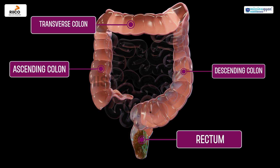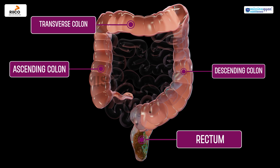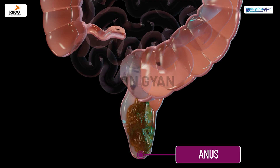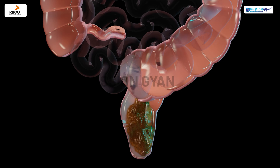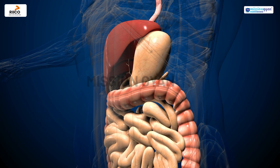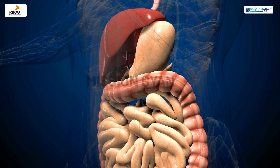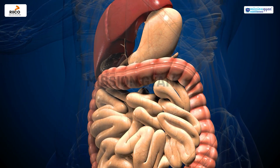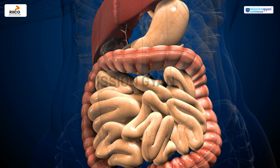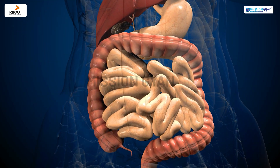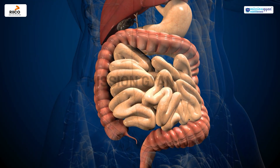The rectum stores the feces until they are ready to be expelled from the body. The anus is the final part of the digestive system where waste is eliminated during defecation. The entire process from eating to eliminating waste is a complex and well-coordinated system that ensures our body gets the nutrients it needs to function.